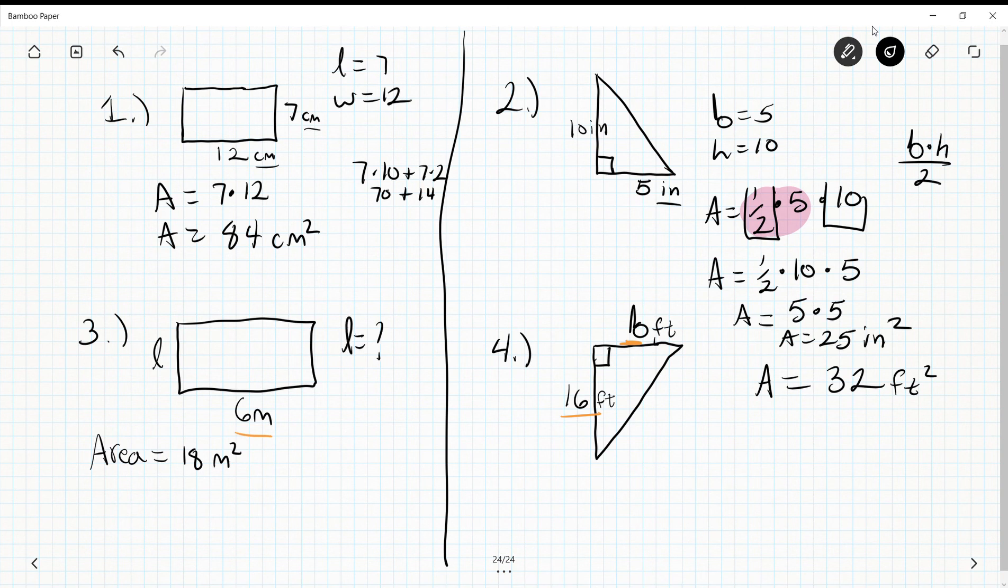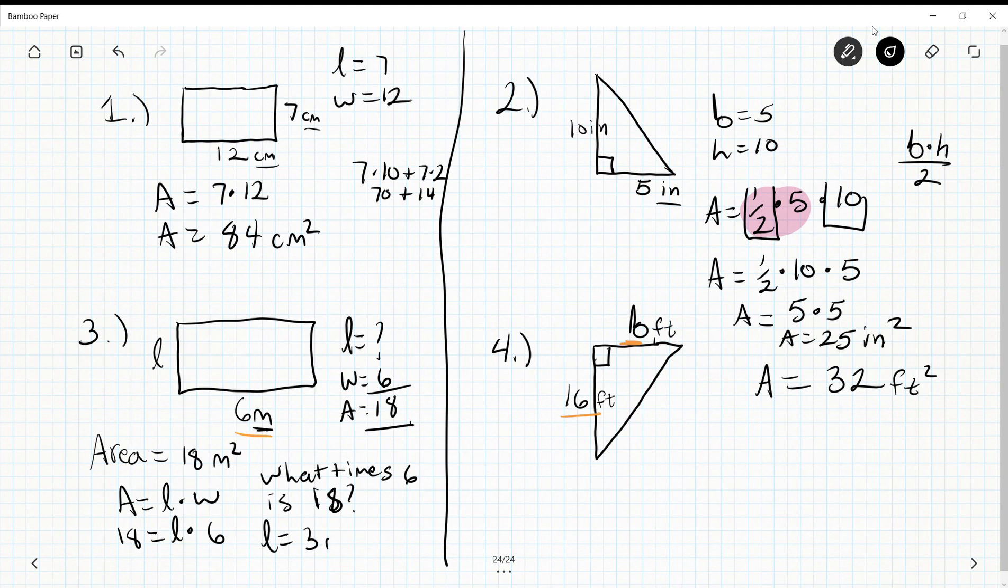I have length equals question mark, width equals 6, and area equals 18. I'm sure some of you are saying we don't have enough information, but we can figure out what length is. I'm going to show the algebraic way. If A equals L times W, I'm going to replace what I know. I know that A is 18, so 18 replaces A. I don't know what L is, so I'm going to leave it, and I know that W is 6. In my head I'm saying what times 6 is 18? That is 3, so L equals 3 meters.